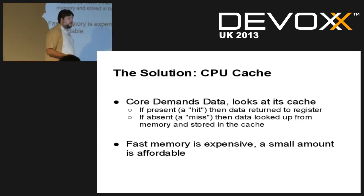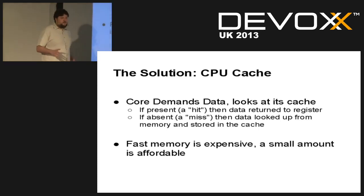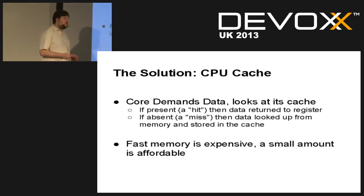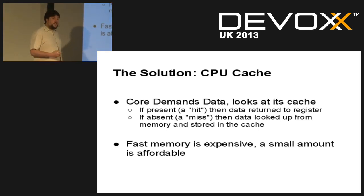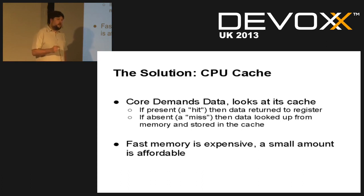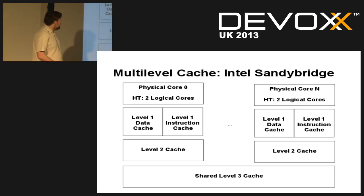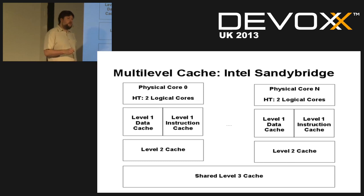The hardware solution is to put a cache between main memory and the CPU. The basic idea is your core demands some data — if it's in a cache, there's a hit. If not, it gets looked up in main memory and then stored in the cache. The key point is it's an economic trade-off: you can afford memory that's very fast, but very fast memory is also very expensive, so you have a small amount of it in your CPU cache.